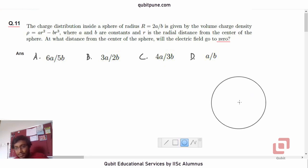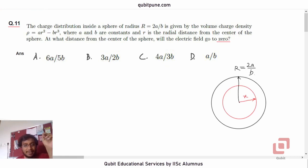Let us assume that the electric field at a distance x is zero. And this will be R given as 2a/b. Now, if you realize, the volume charge density ρ is ar² - br³. It is given to us.